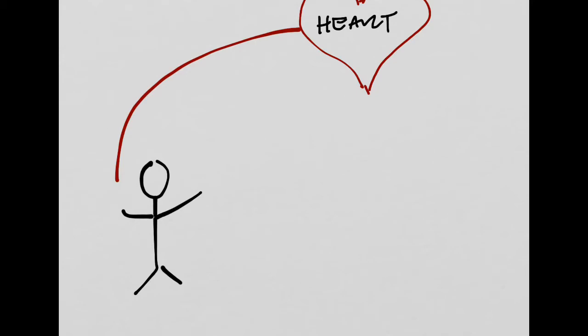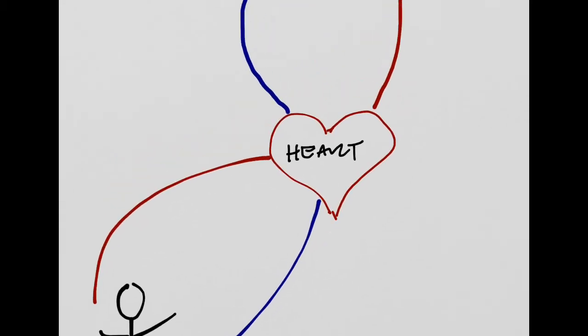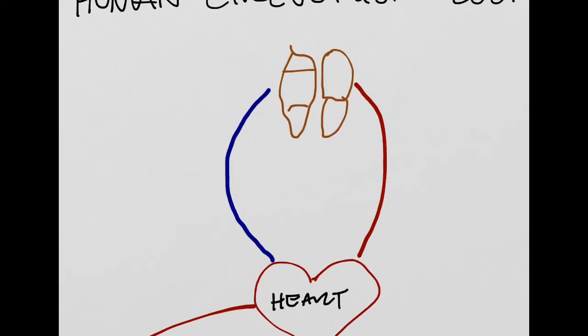And once the cells take up all that oxygen and use it for aerobic cellular respiration, there's no oxygen left. However, they've dumped out from the cells all the CO2, which needs to be gotten rid of. And so, then the CO2 returns back to the heart. And the heart then pumps it to the lungs to drop off the CO2 and pick up the oxygen.